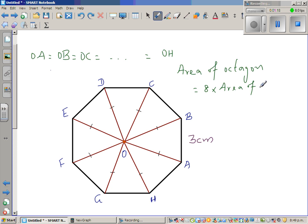So let us take triangle AOB. If you know area of triangle AOB and that times it by 8 will give you the area of the octagon. So let us look at this triangle AOB.